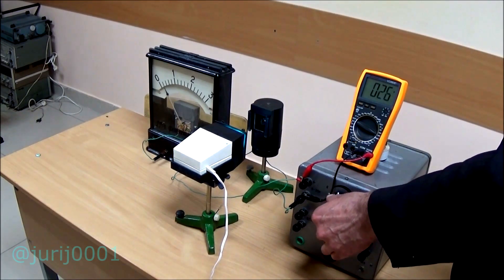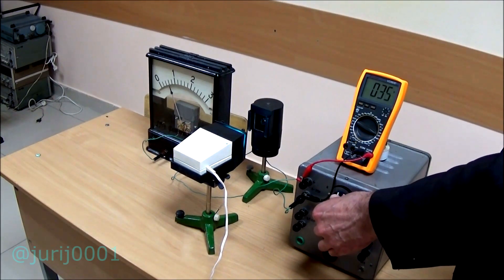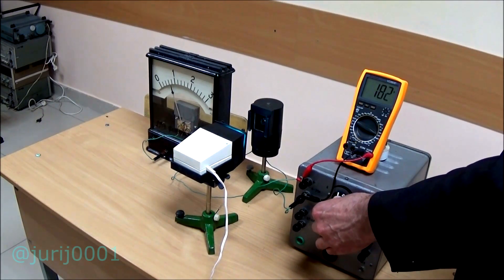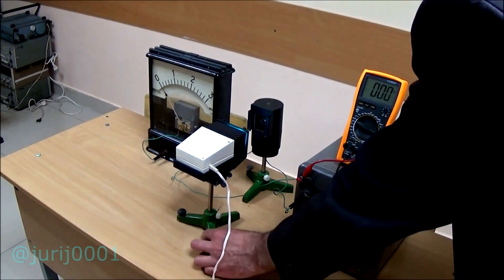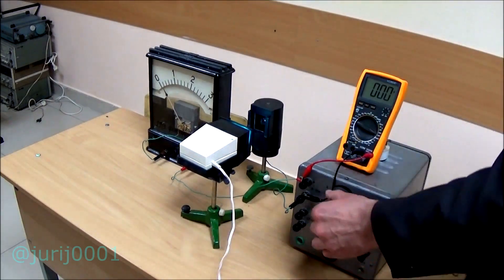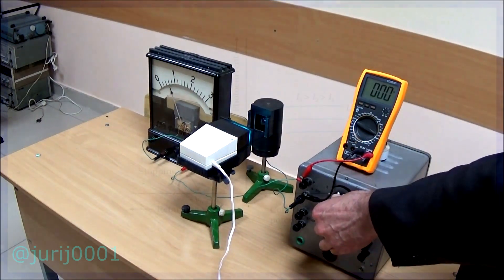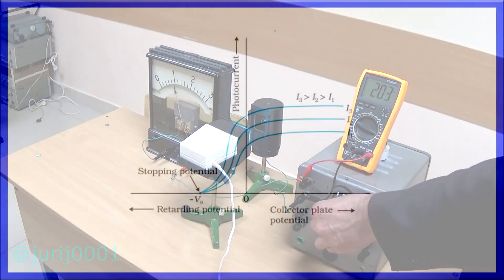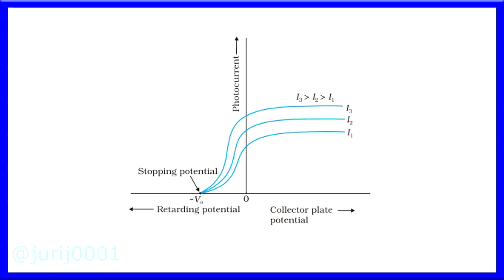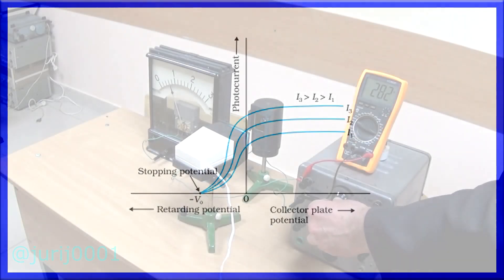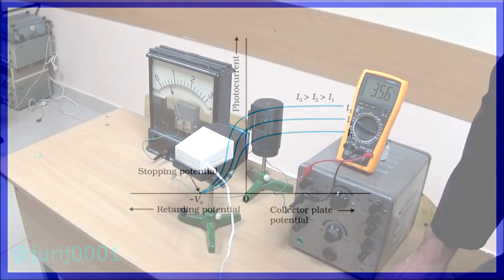This will be observed for whichever illumination level of the cathode you choose. Only the saturation current value will differ. You can also use light filters, but I am just finishing up.